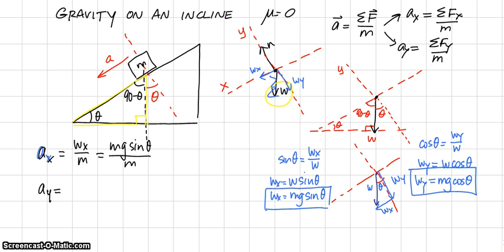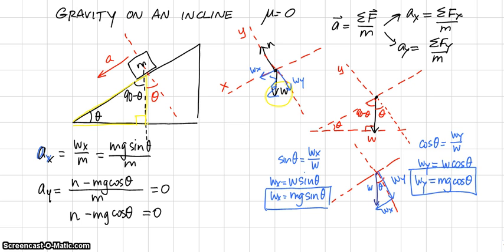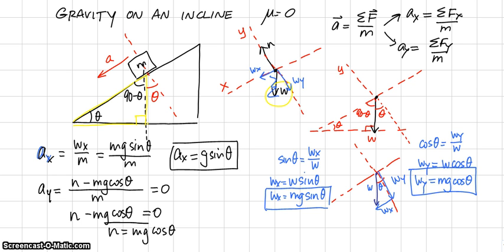For the acceleration in the y-direction, the forces are the normal force in the positive y-direction minus mg cosine theta in the negative y-direction, divided by the mass. Because the object moves along the incline, the acceleration in the y-direction is zero. This tells us that the normal force equals mg cosine theta. With the masses canceling, the acceleration along the incline is simply g times sine of theta. These are the two key equations of motion for an object on a frictionless incline.